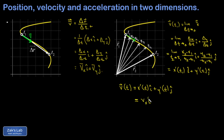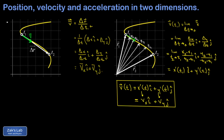This can also be written in terms of velocity components as vx i-hat plus vy j-hat, where vx is the instantaneous velocity in the x direction and vy is the instantaneous velocity in the y direction.